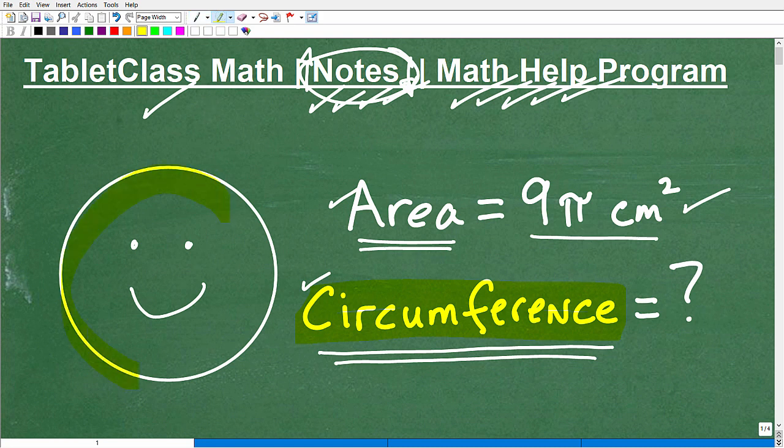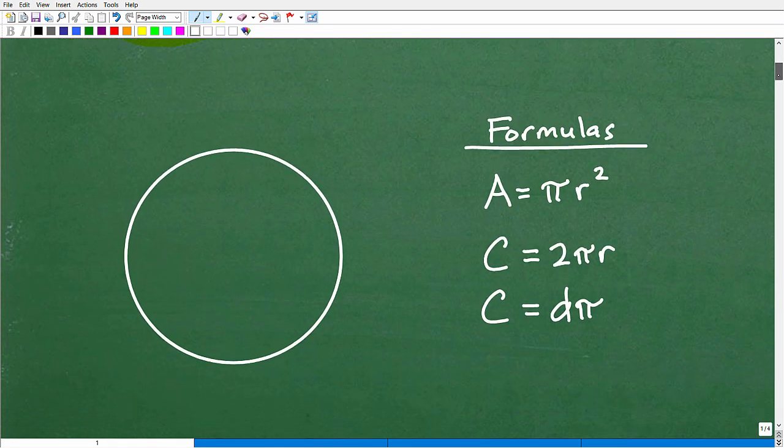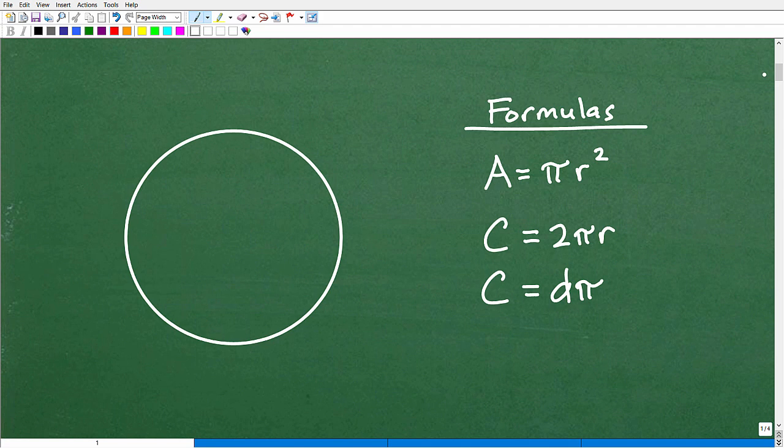So again, we have this circle. We know the area of the circle is 9 pi centimeters squared. What is the circumference? Well, we're going to have to know a few things here. We're going to have to know something about the area of a circle, and we're going to have to know what this word means, circumference, and there's even a formula that goes with that. So let's review these basic concepts here, and then we'll get to solving the problem.